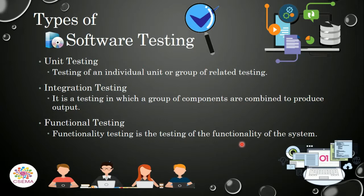Now the types of software testing: different kinds of testing are performed at different phases of development. The first type is unit testing. Unit testing is the testing of all individual units or a group of related units, testing different modules individually one by one.